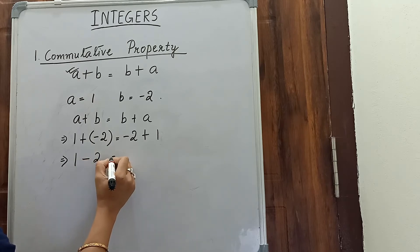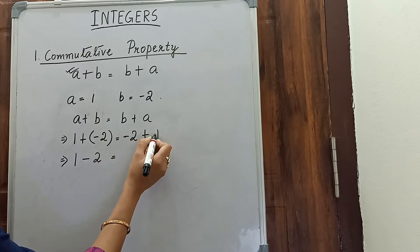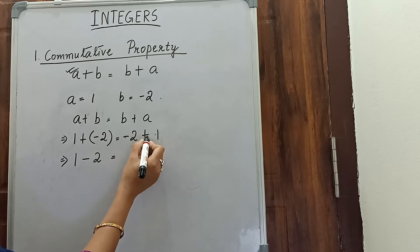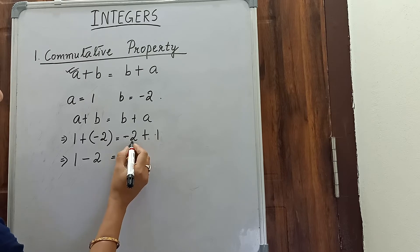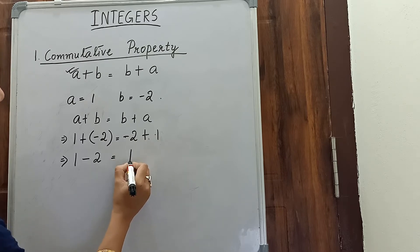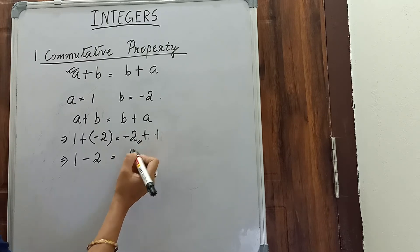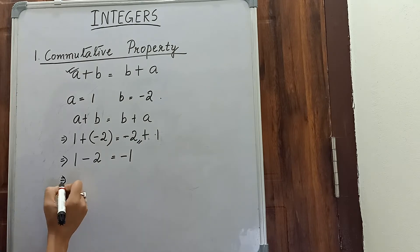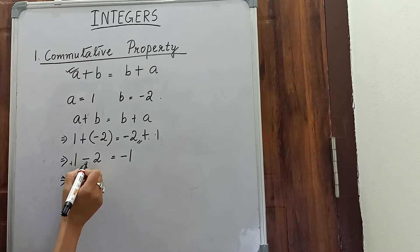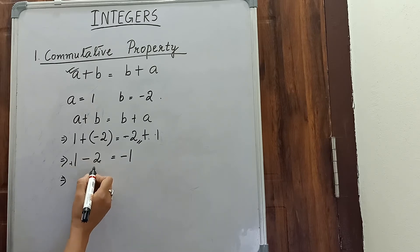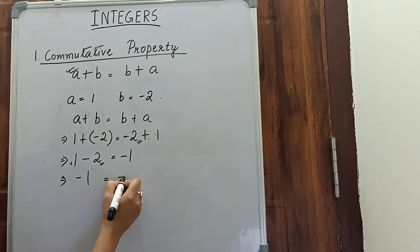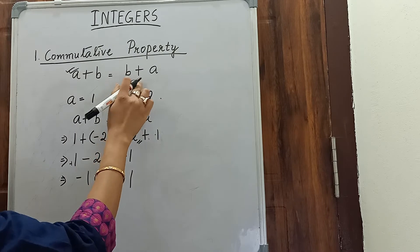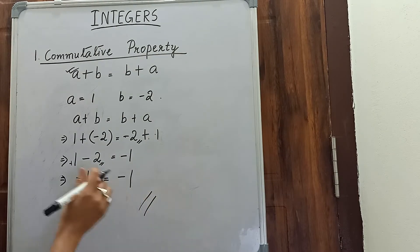Now, 1 plus minus is minus, so it is minus 2, giving us minus 1 on the left. On the right, minus 2 plus 1: plus and minus is minus, so 2 minus 1 is 1, and the sign of the greater number is minus, giving minus 1. So a plus b equals b plus a — hence it is proved.